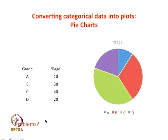Pie charts are easy to represent and understand, but they have problems. In this case there are only 4 grades, so it is easy to come up with a pie chart. But imagine a situation where there are 25 different categories possible — each percentage area will keep shrinking. If you have one category which is 1% and another which is 41%, the 41% will take a huge chunk while the 1% will barely be visible. It is difficult to represent data in pie charts when the volume increases and there are multiple different categories.